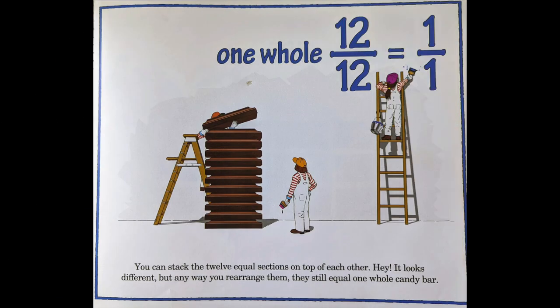One whole. Twelve over twelve equals one over one. You can stack the twelve equal sections on top of each other — it looks different, but any way you rearrange them, they still equal one whole candy bar.